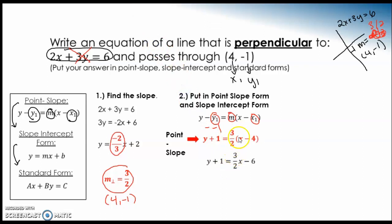All right. So here we distributed 3 halves times x, 3 halves times negative 4 is 6. And you can plug that in your calculator. Then we subtract 1 from both sides and we get y equals 3 halves x minus 7. So we have our slope intercept form.